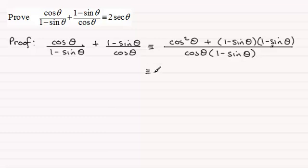So we've got to expand these two brackets. So we've got cos squared theta for the first term. Expanding the brackets, we've got 1 times 1, which is 1. And then we've got 1 times minus sine theta, which is minus sine theta. Then we've got minus another sine theta. So that's minus 2 sine theta. And then we've got minus sine theta times minus sine theta, which is plus sine squared theta.